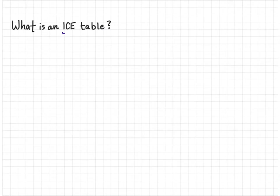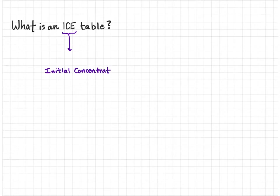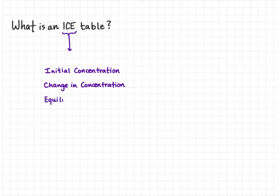We're going to start with what is an ICE table. ICE is an acronym. I stands for initial concentration — that's the concentration present before any reaction takes place. C stands for change in concentration — that's the concentration change from when we start the reaction to when we reach equilibrium. And E stands for equilibrium concentration — that's the concentration at which our reaction appears to have stopped.